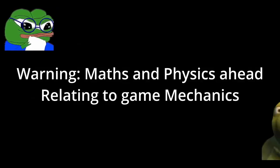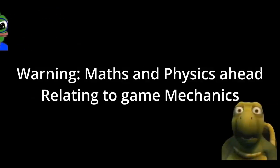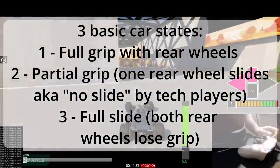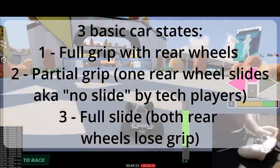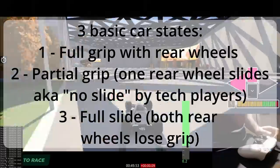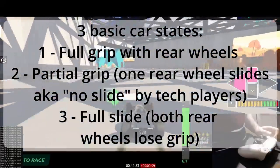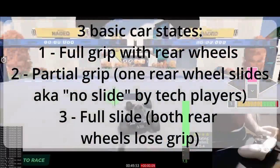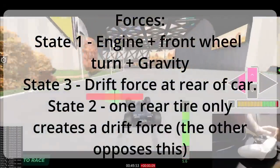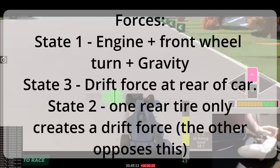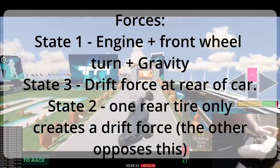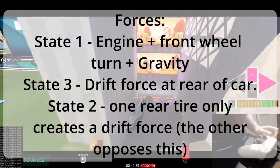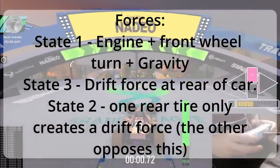Let's briefly go over how the maths and physics work in this game and why the speed drift exists. From a physics point of view there are three basic states that the car can exist in: full grip; partial grip, which is where one rear wheel loses grip and the other keeps grip — the community calls this a no slide; and state three which is a full slide where all of the wheels have lost grip. In state one only three forces apply to the car: the engine pushing forward, the front wheels providing a turning force if needed, and gravity. State three also adds a drift force onto the entire car, applied only to the rear wheels in the exact opposite direction to the front wheel positional vector.